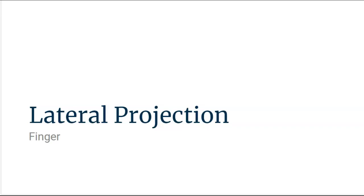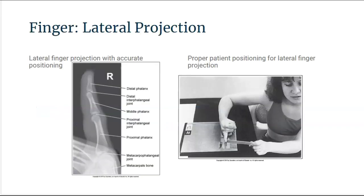Moving on to the lateral finger projection. Image analysis guidelines state that there should be no overlap from the adjacent fingers. The anterior surface of the middle and proximal phalanges should demonstrate mid-shaft concavity, and the posterior surface should show slight convexity. More than twice as much soft tissue width is demonstrated on the anterior surface than the posterior surface, and the interphalangeal joints are demonstrated as open spaces.